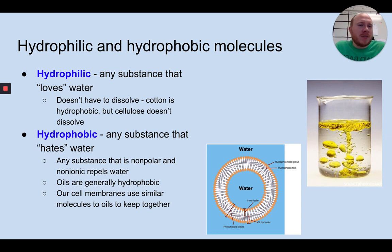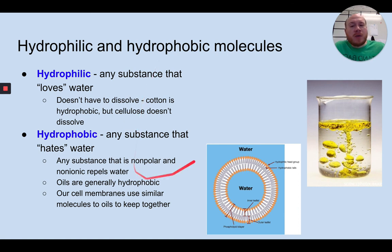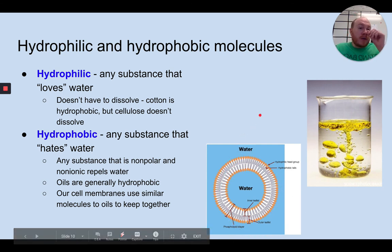What we find out in biology is that there's a lot of sometimes just little exceptions to some of these things. Our cell membranes use similar molecules to oils to help keep them together. And if you look down here, I have what's called a phospholipid shell, and this is kind of how our cell membranes work. Our cell membranes are made up of what are called phospholipids, and we'll talk about these a little bit more later in another video. But phospholipids are both hydrophilic and hydrophobic. They have different parts of their molecule that have different properties.